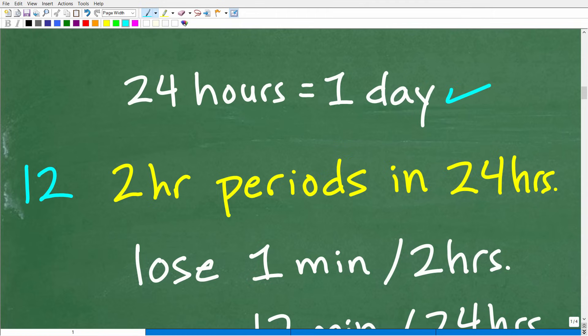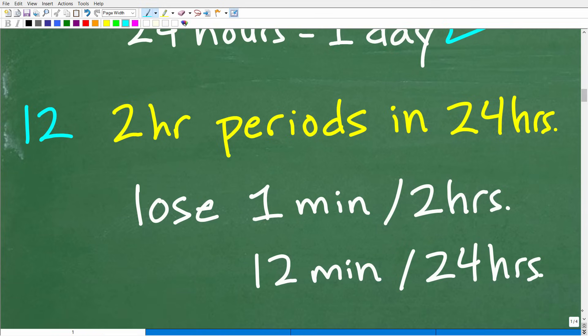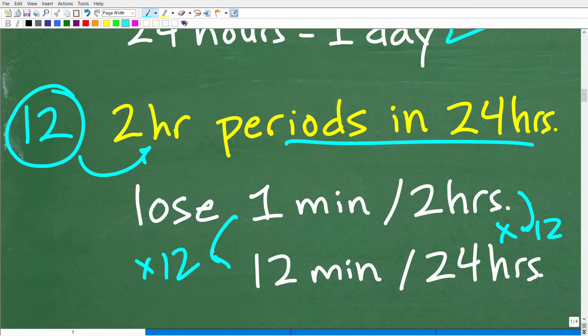All right, so I know that's 24 hours in one day, and I'm thinking to myself, all right, this clock is losing one minute every two hours. Okay, so two hours, I have 24 hours in one day. So I'm thinking to myself, there's 12 two-hour periods in 24 hours, because 12 times 2 is 24, okay? So if this clock is losing one minute every two hours, well, from two hours to 24 hours, I got to multiply that by 12. So to figure out how many minutes this clock is going to lose in one 24-hour period, I'm going to multiply this one minute by 12, okay, or by 12. So it's going to lose 12 minutes every 24 hours.